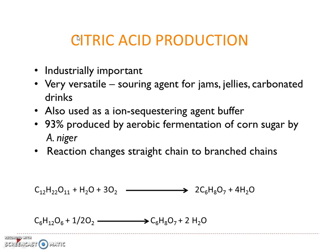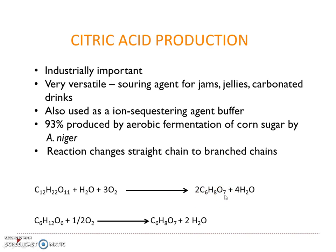Let us discuss citric acid production as an example of a fermentation product. Citric acid is an industrially important, versatile product used as a souring agent for jams, jellies, and carbonated drinks, and as an ion sequestering agent and buffer. About 93% of citric acid is produced by aerobic fermentation of corn sugar by Aspergillus niger. The reaction converts the straight-chain substrate (C₁₂H₂₂O₁₁ + H₂O + 3O₂) into two molecules of citric acid (C₆H₈O₇) plus water.